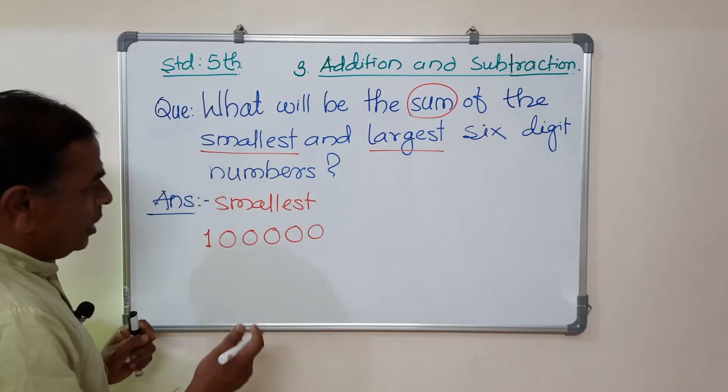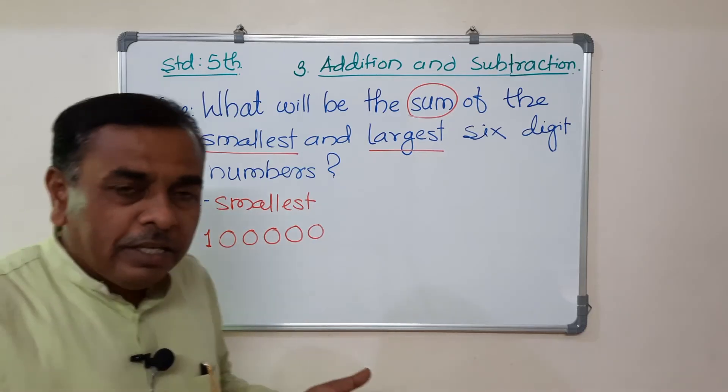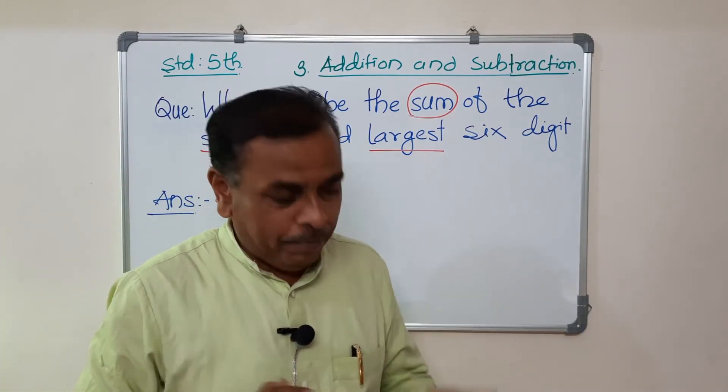We have to count again. 1, 2, 3, 4, 5, 6. This is the smallest number. Okay.